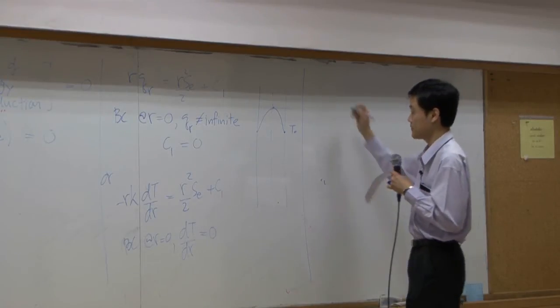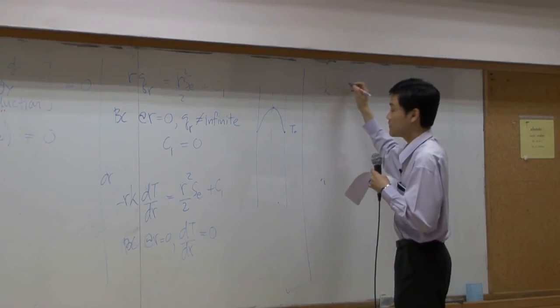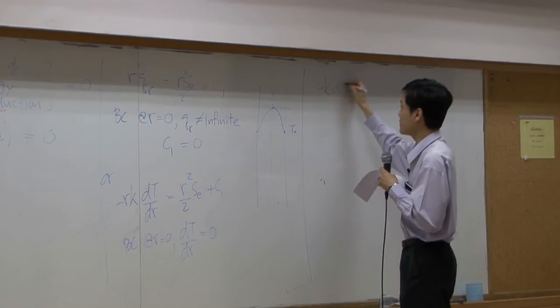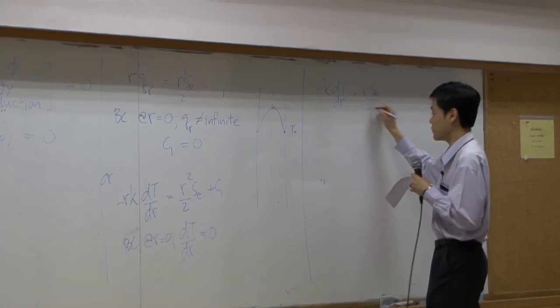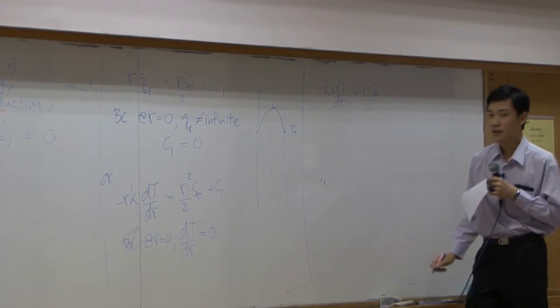Okay, so then you get minus k dt by dr equal to r se over 2. Integrate it again,